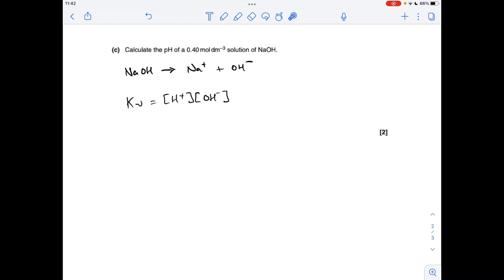So to calculate the pH of a strong alkali, we use the KW expression, rearrange to get the H plus concentration, and then minus log. Now annoyingly, they haven't quoted the temperature here, so I'm just going to assume that it's 25 degrees C. So I'll just go through the numbers now.